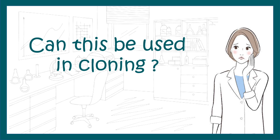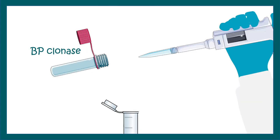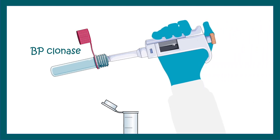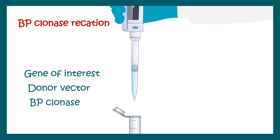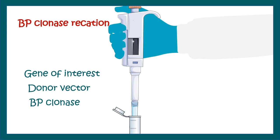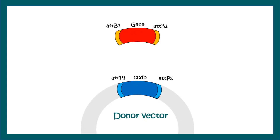Scientists thought whether they could use this kind of strategy in a cloning method, and of course that's the birth point of gateway cloning. The first reaction is known as the BP clonase reaction, where we add BP clonase. In this reaction, we have our gene of interest flanked by particular recombination sites, then we have our donor vector, then we have our BP clonase enzyme. When we add all of these together, the gene of interest flanked by ATT-B sites gets integrated into the donor vector.